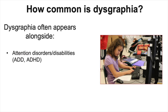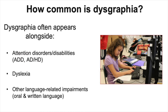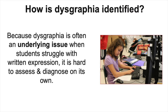Dysgraphia often appears alongside attention disorders like ADD and ADHD. Several people who have dyslexia also have dysgraphia and vice versa. And even though the definition of dysgraphia is about the physical side of writing, it's also common to see it along with other impairments with oral and written language. It can be very difficult to identify a physical problem like dysgraphia that is so closely related to the invisible process of thinking and writing. Because dysgraphia is often an underlying or coexisting issue, it's hard to assess and diagnose whether a student is struggling with organization, attention, and executive function, or with physical transcription, or both.